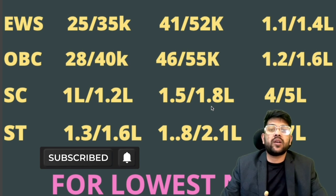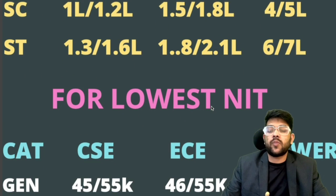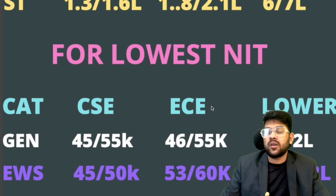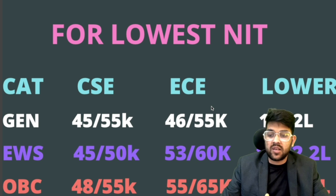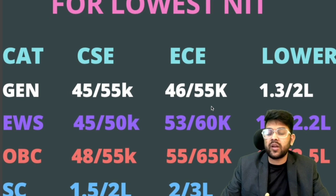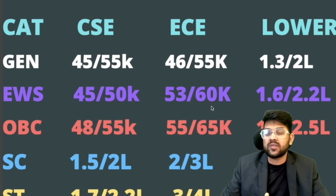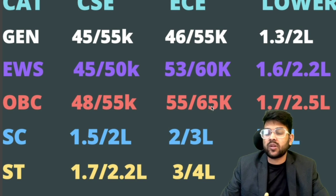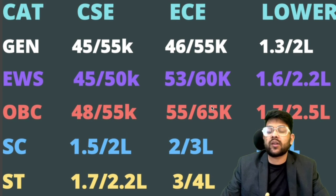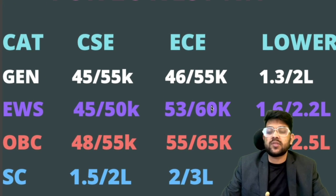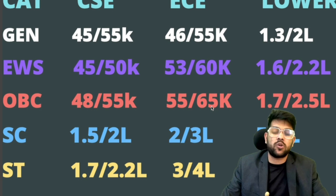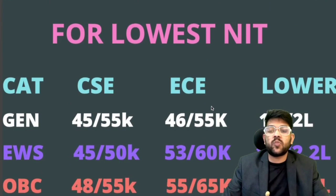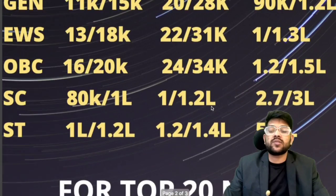For the lowest NIT colleges: EWS CSE cutoff is 45,000–60,000. For OBC: 48,000–55,000. For SC: 1.5 lakh–2 lakh. For ST: 1.7 lakh–2.2 lakh rank. These are CRL ranks for CSE; EC and lower branch cutoffs can be checked on-screen. This covers complete information for all NIT colleges across CSE, EC, and lower branches.